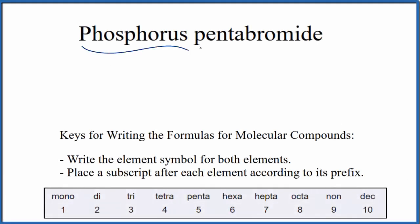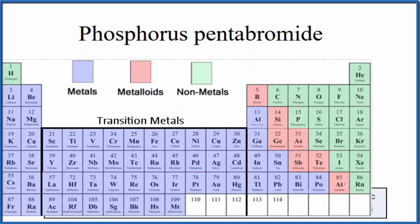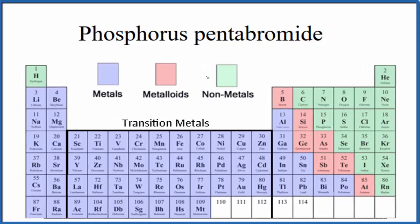To write the formula for phosphorus pentabromide, we first need to determine what type of compound we have here. So if we look at the periodic table divided into metals, nonmetals, and metalloids,